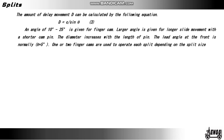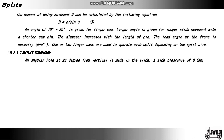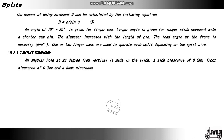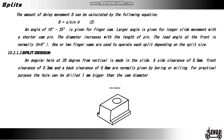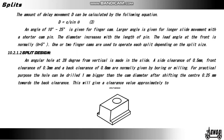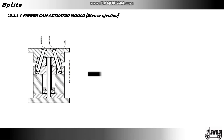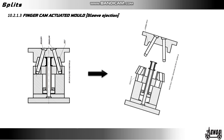Split design: an angular hole at 28° from vertical is made on the slide. A slight clearance of 0.5 mm, a front clearance of 0.3 mm, and a back clearance of 0.8 mm are normally given by boring or milling. For practical purposes the hole can be drilled 1 mm bigger than the cam diameter after shifting the center 0.25 mm towards the back; this will give a clearance of approximately 0.3 mm on the front side and 0.8 mm at the back side. Finger cam actuated mold with sleeve ejection: the first picture shows a closed condition and the second picture shows an open condition of the mold and the ejection.